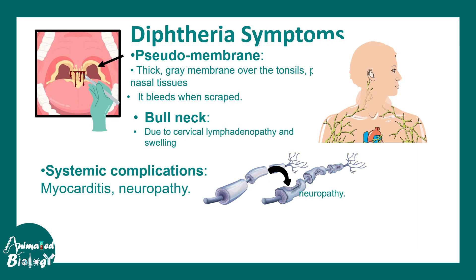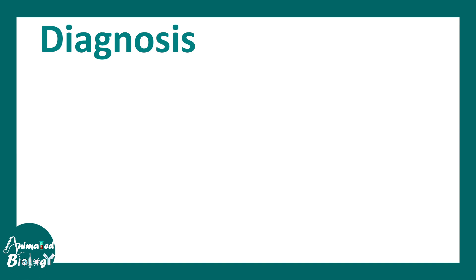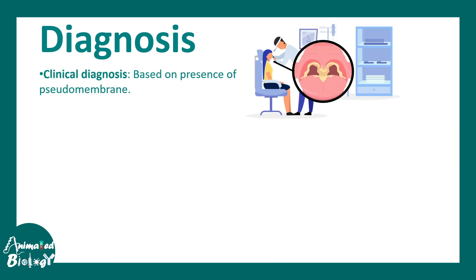Neuropathy occurs because neurons are highly metabolically active — they need continuous protein synthesis, and the diphtheria toxin may abrogate that process. Myocarditis means inflammation of the muscles of the heart, and those cells are also highly metabolically active. Additionally, there can be airway obstruction which may lead to respiratory distress.